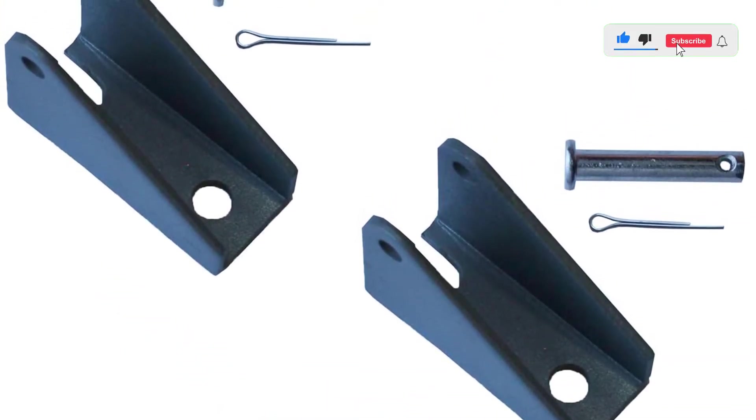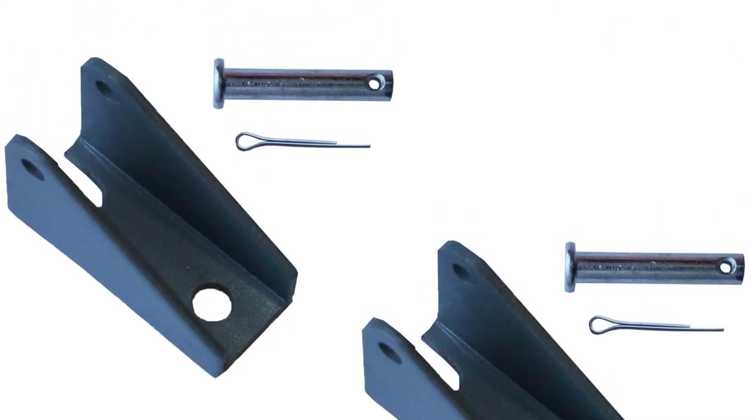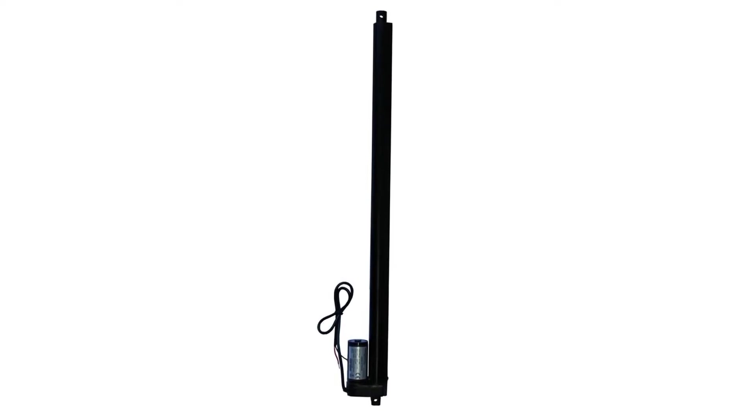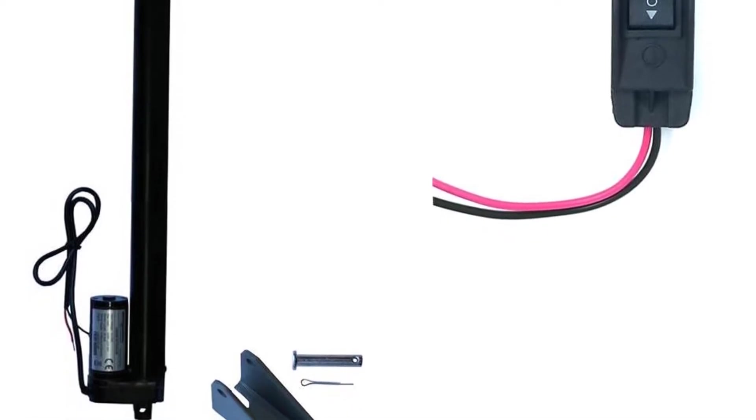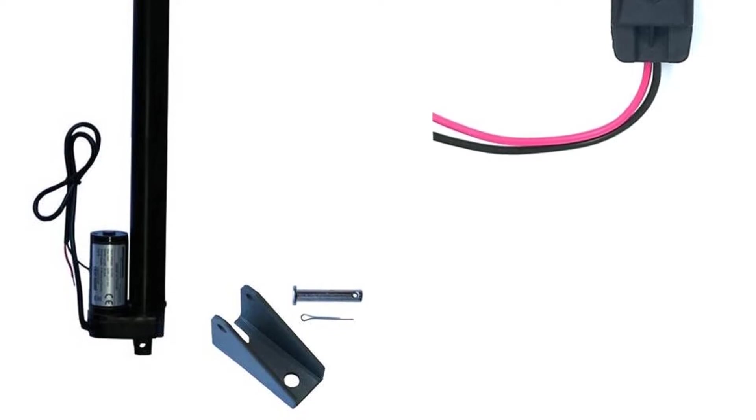To be precise, you get a stroke length of 750 millimeters with it. This makes it ideal for all kinds of uses including installing with a windmill. Coming to its maximum load capacity, it is similar to other smaller linear actuators at 225 pounds. Another similarity between this and other options is the given travel speed of 10 millimeters per second.